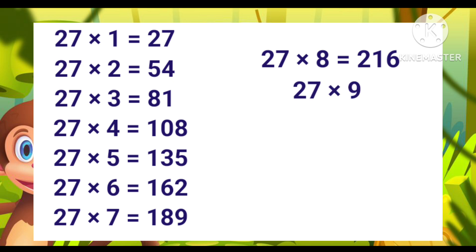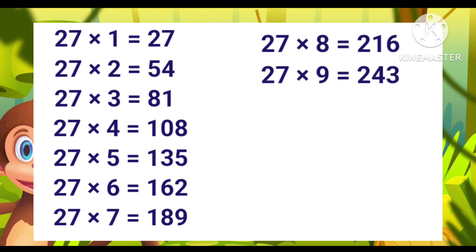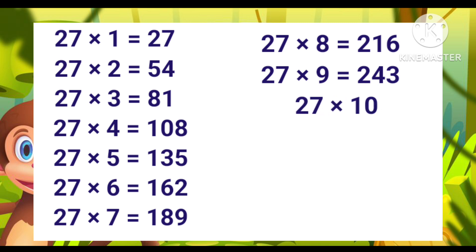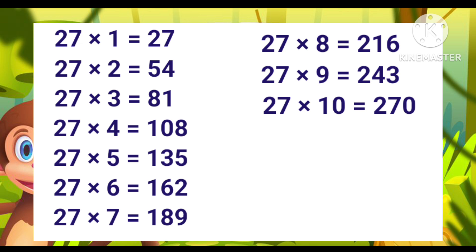27 eights are 216. 27 nines are 243. 27 tens are 270.